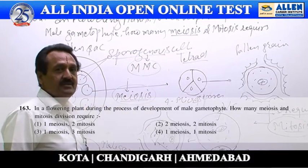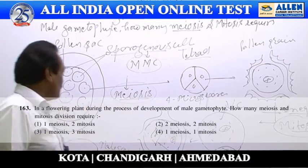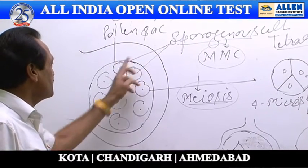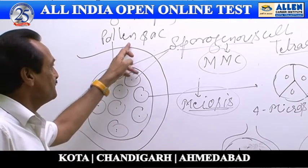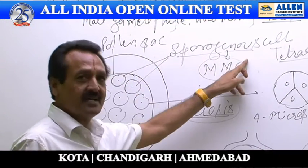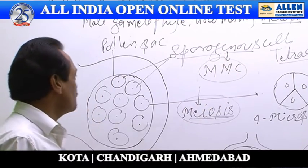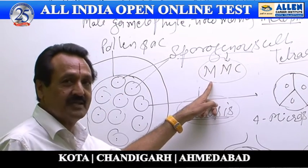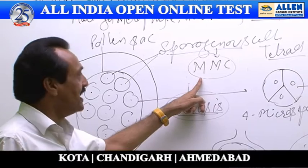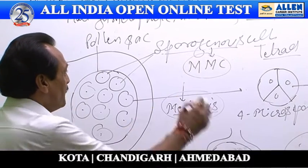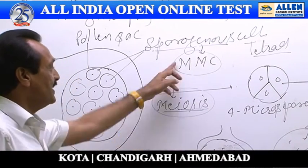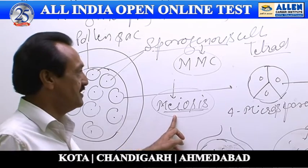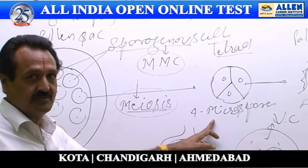Question number 163: in a flowering angiospermic plant, for the development of male gametophyte, how many meiosis and mitotic divisions are required? Inside the pollen sacs of the anther, many sporogenous cells are formed. Every sporogenous cell finally changes into a microspore mother cell, and every microspore mother cell divides by meiosis. As a result, four microspores are formed.